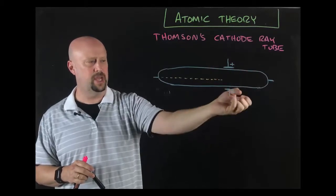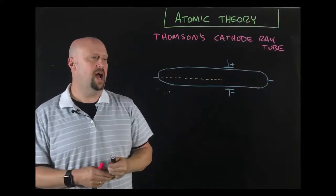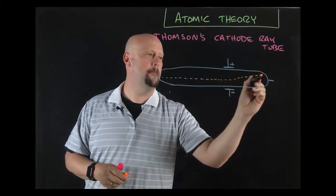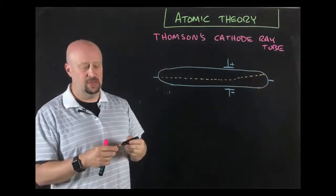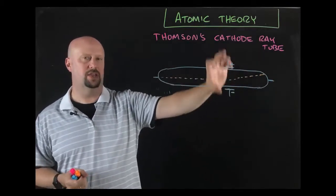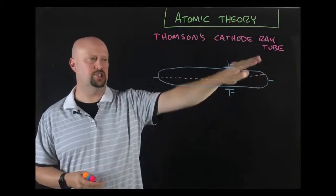Essentially there's a positive charge pulling it on one end, negative on the other, so the beam is flying through. What Thompson notices, if he puts magnetic poles on the other sides - positive charge, negative charge, positively charged plate on this side, negatively charged plate on this side - this beam that he's firing bends. It doesn't keep going straight.